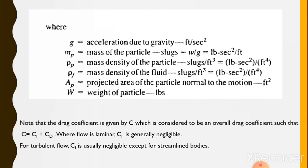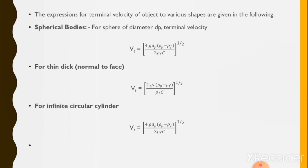Note that the drag coefficient C is considered to be an overall drag coefficient such that C = CF + CD. Where flow is laminar, CF is generally negligible. For turbulent flow, CF is usually negligible except for streamlined bodies.